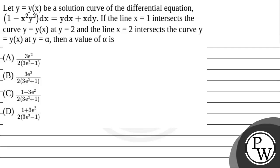Hello, let's read this question. The question says: let y = y(x) be a solution curve of the differential equation (1 - x²y²) dx = y dx + x dy. If the line x = 1 intersects the curve y = y(x) at y = 2, and the line x = 2 intersects the curve y = y(x) at y = alpha, then find the value of alpha.